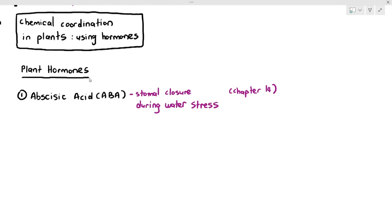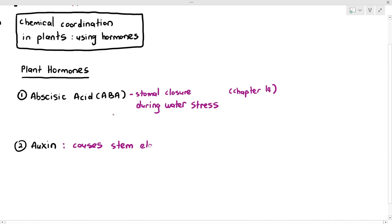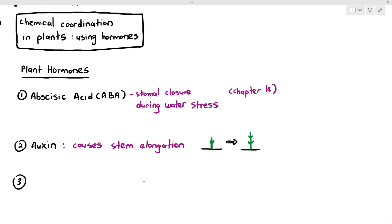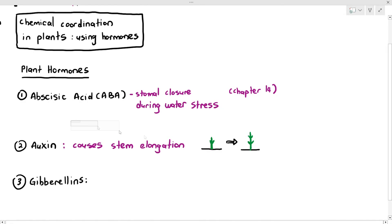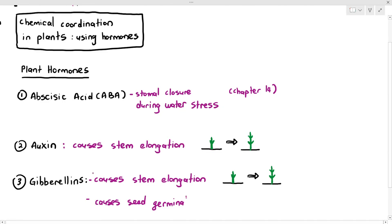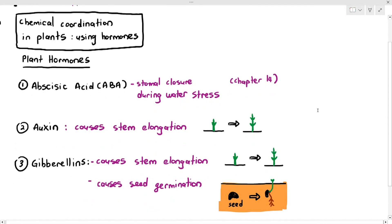I will provide a link to the top right corner if you need to refresh your mind on that particular chapter. The other two hormones we're going to look at are: auxin, which causes stem elongation where the plant becomes taller, and gibberellins, which is another type of plant hormone. Just like auxin, gibberellins can also cause stem elongation, and gibberellins also helps with seed germination. So we're going to look at auxin and gibberellins for this particular video.